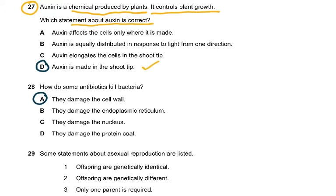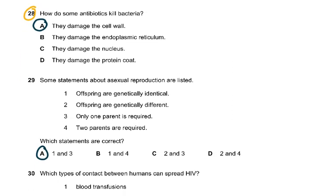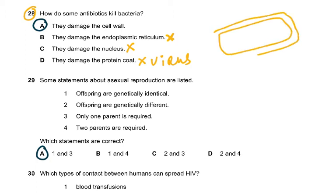Question 28: how do some antibiotics kill bacteria? Antibiotics like augmentin or ciprofloxacin kill bacteria but not your body cells because bacteria have a cell wall. The antibiotics damage the cell wall. Endoplasmic reticulum and nucleus are not present in bacteria, and a protein coat is found in viruses, not bacteria. Bacteria have a cell wall made of peptidoglycan, with a cell membrane inside, cytoplasm, a loop of DNA, and possibly plasmids.